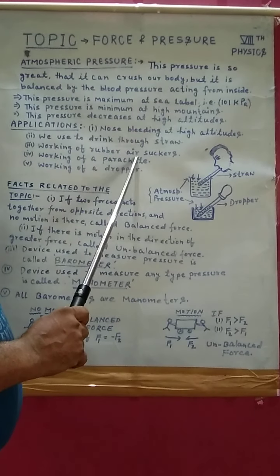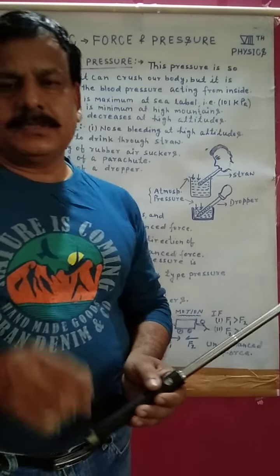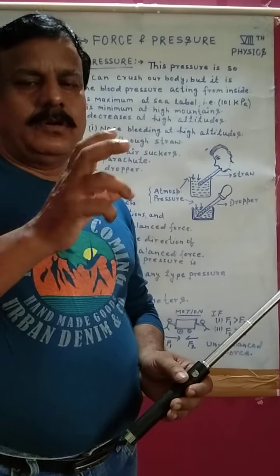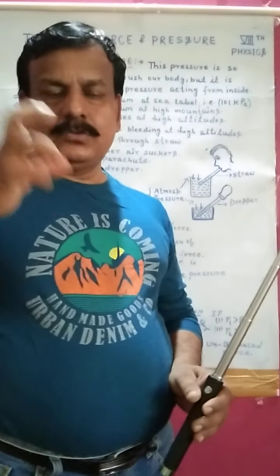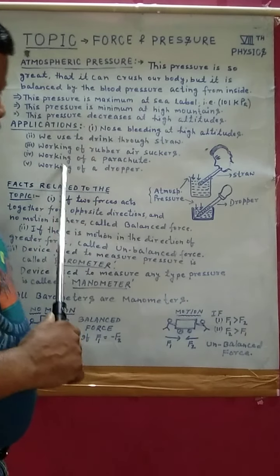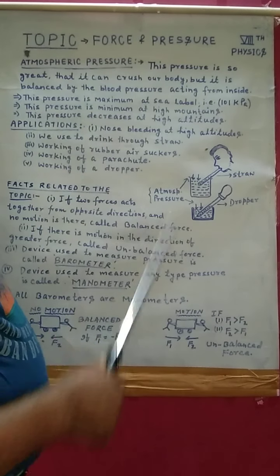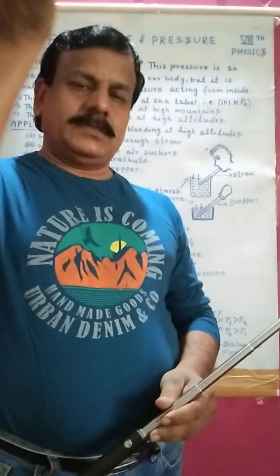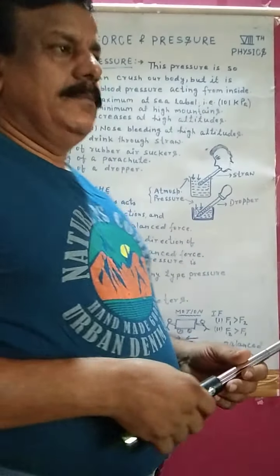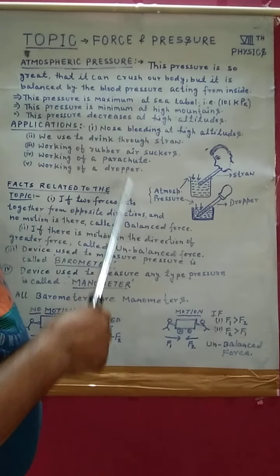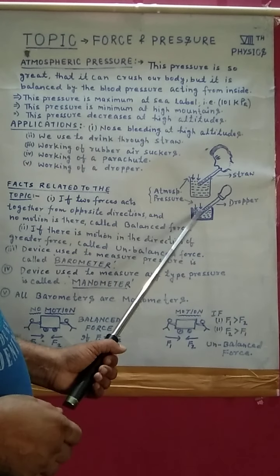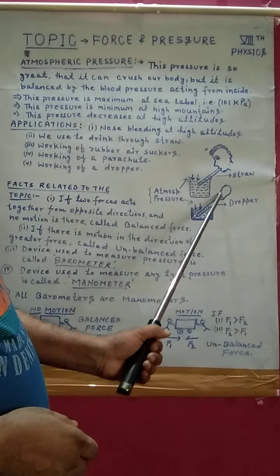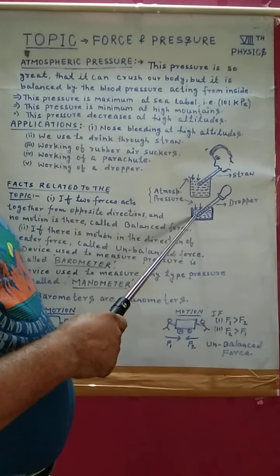Number three: working of a rubber air sucker. You have seen a rubber air sucker — if you fix it in the wall, it stays fixed without any pasting materials. That is due to atmospheric pressure. Number four: working of a parachute. When a parachute is coming down, it is balanced in the air due to atmospheric pressure. Number five: working of a dropper. If you want to take some liquid in a dropper, it is possible due to atmospheric pressure.